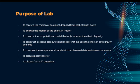Starting out, we're going to discuss the purposes of the lab. They were to capture the motion of an object dropped from rest straight downwards, to analyze the motion of an object in Tracker, to construct a computational model that only includes the effect of gravity, and then to construct a second computational model that includes the effect of both gravity and drag, then to compare the computational models to the observed data and draw conclusions, to discuss potential error, and finally to discuss the what-if questions.